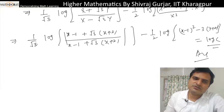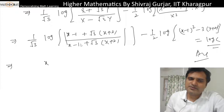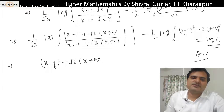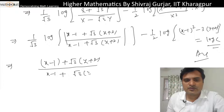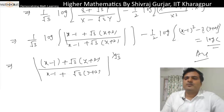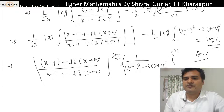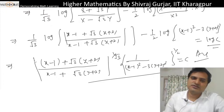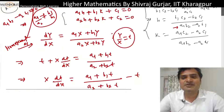Substituting back t = Y/X, then X = x + 1 and Y = y + 2: the final answer is (1/√3)·log|(x + 1 + √3(y + 2))/(x + 1 - √3(y + 2))| - (1/2)·log[(x+1)² - 3(y+2)²] = log C. This completes the method for equations reducible to homogeneous form. Now moving on to exact differential equations.